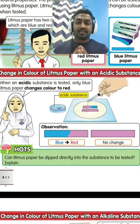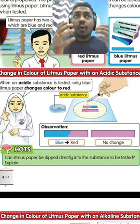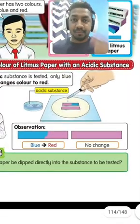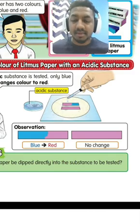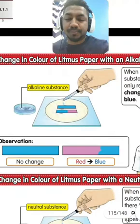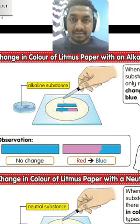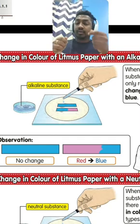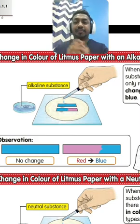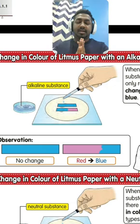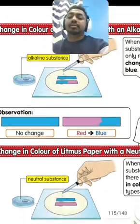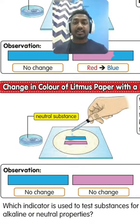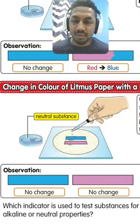To recap: if the blue litmus paper changes to red, the substance is acidic. If you put the red litmus paper into an acidic solution, there will be no change. If you put the red litmus paper into an alkaline substance, it will turn blue. If you put the blue litmus paper into an alkaline substance, there will be no change. And if both litmus papers show no change, the substance is neutral.